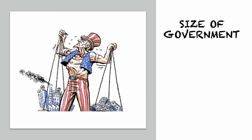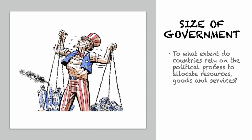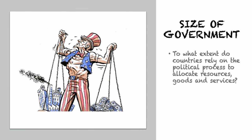Let's start with the size of government. We're looking at the extent to which countries rely on the political process to allocate resources, goods, and services. How do government expenditures and tax rates affect economic freedom? They affect it because if the government is more relevant to distributing goods and services, there's less ability for individuals to make those choices. Low levels of government spending as a share of total spending, smaller government enterprise sectors, and lower marginal tax rates score high on this measure. Countries with state-run capitalism are going to score pretty low here.